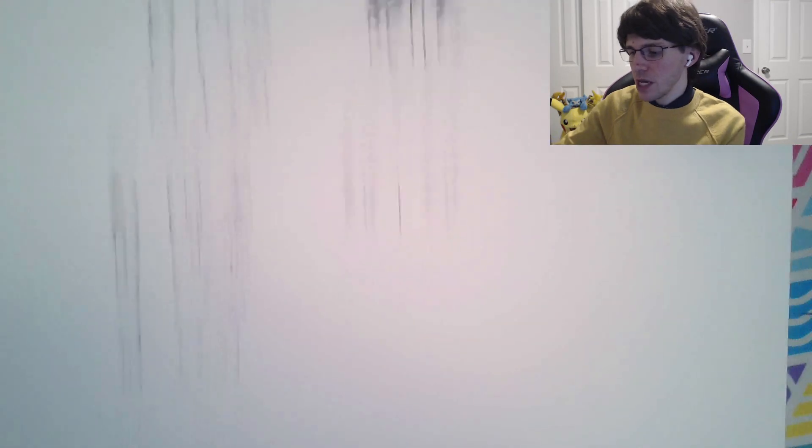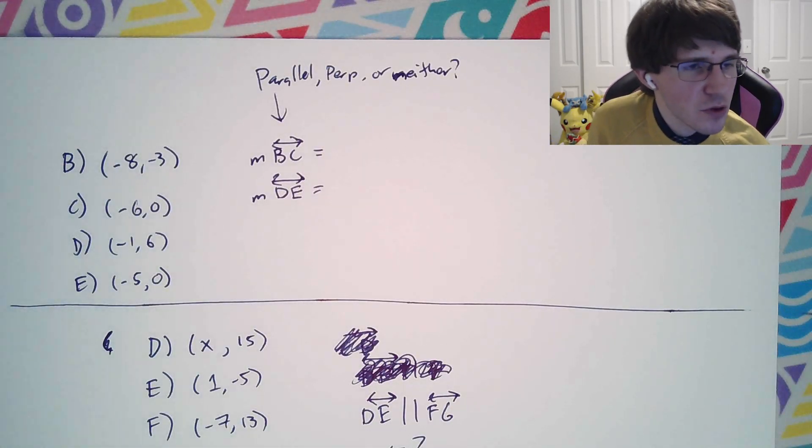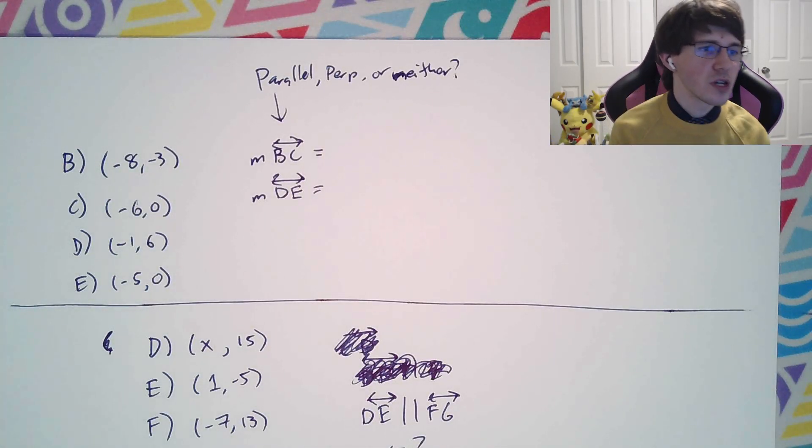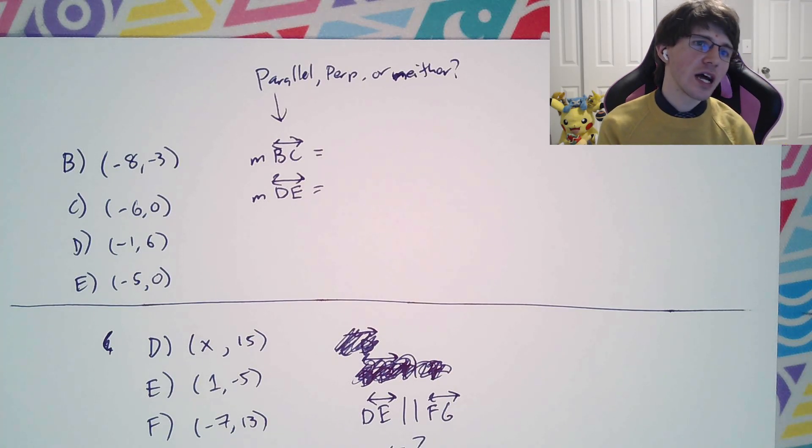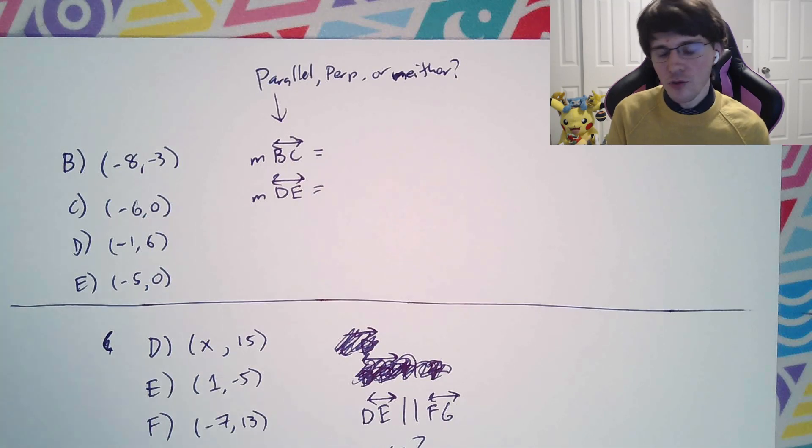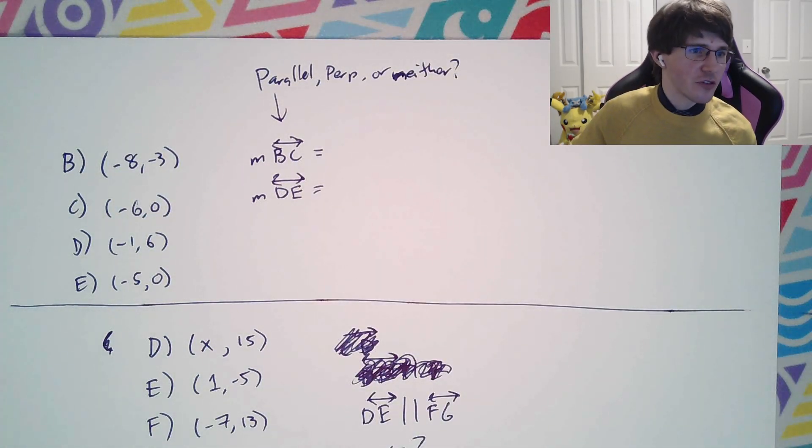Let's try some practice problems. If it asks you a question like, here are these four coordinates, you need to figure out are these lines parallel, perpendicular, or neither? Here's how you go about it. First, you need to figure out what the slope is. So to figure out what the slope is, you're going to do that same exact idea we just talked about, y2 minus y1 over x2 minus x1.